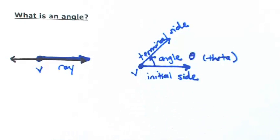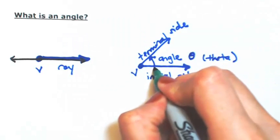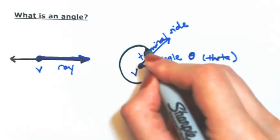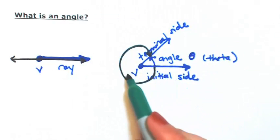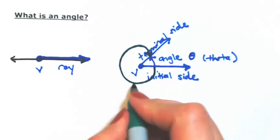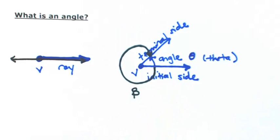Now from this initial side to the terminal side, we could actually go a different way. Let's say I went clockwise instead. So going from the initial side to the terminal side, this could be considered a different angle. Let me use a Greek letter called beta.